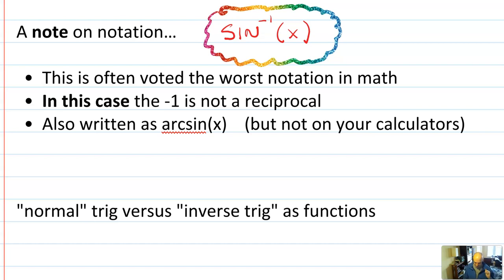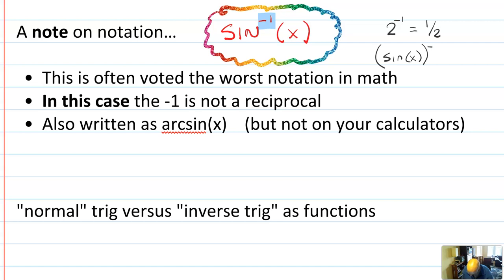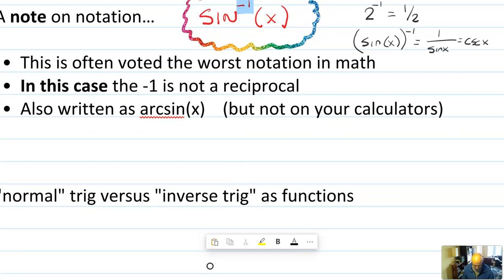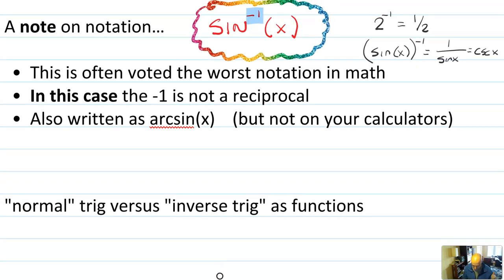Here's why it's the worst notation: in other contexts, negative one as an exponent implies a reciprocal — like two to the negative one is one half. But sine inverse is not a reciprocal. It's actually made worse because sine of x to the negative one, where the negative one is on the outside, is a reciprocal — and we have a name for that, which is cosecant of x. So we do frequently take reciprocals of sine, cosine, and tangent, and we have notation for those reciprocals, but it's not the same as this sine inverse notation.